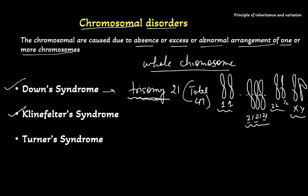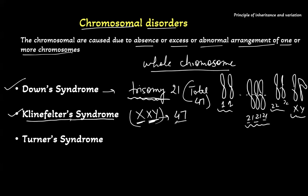Next is Klinefelter syndrome. In this, there is an excess X chromosome in the case of males. In males, there is normally only one X chromosome and one Y chromosome, but here there is one extra chromosome. So here also we have 47 chromosomes — there is one extra chromosome.